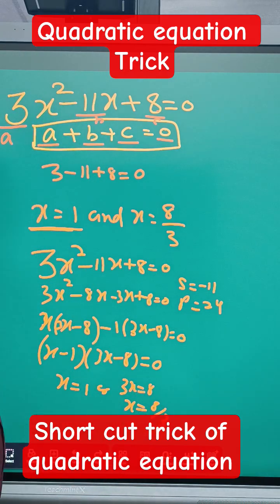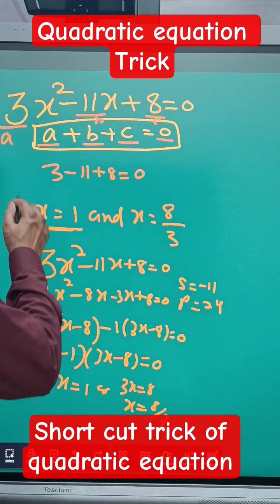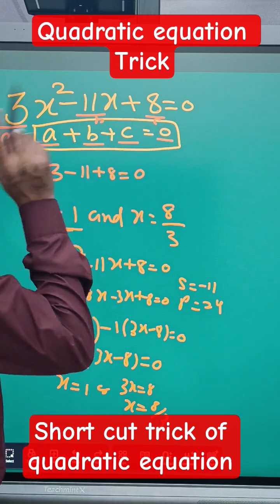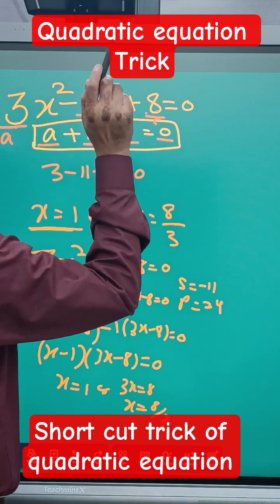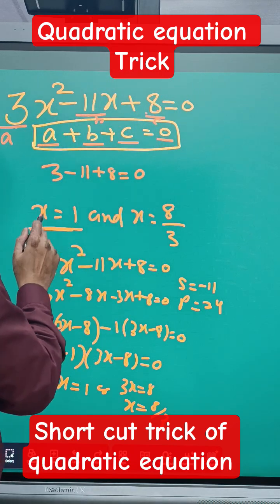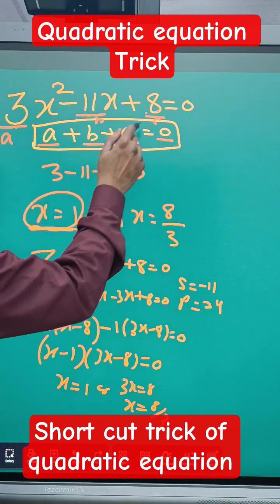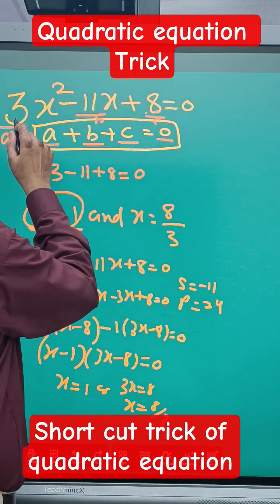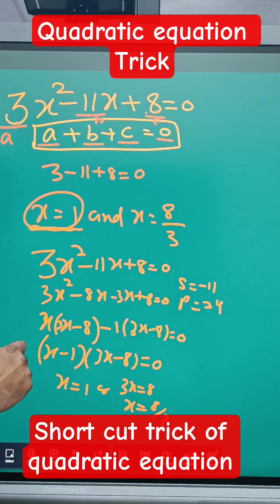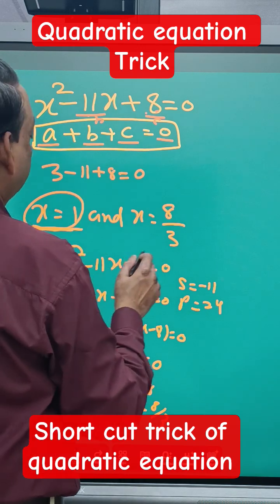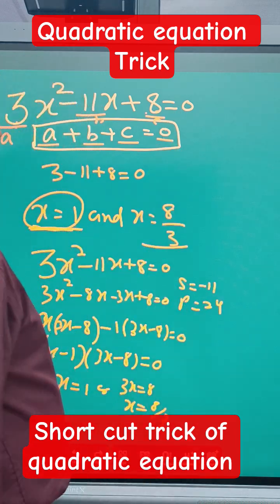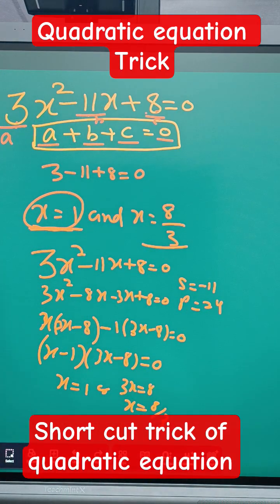This is the method we do in school. But whenever you get a sum where the condition is a + b + c = 0, the first answer is always x = 1 and the second answer will be c over a. So in this case x = 1 and x = 8/3 - you can directly find the answer.